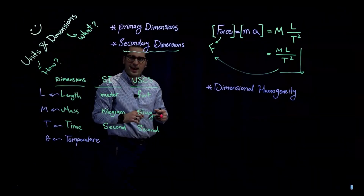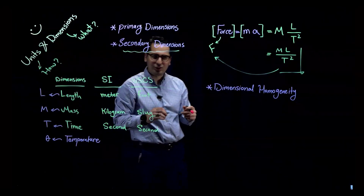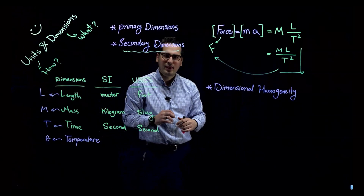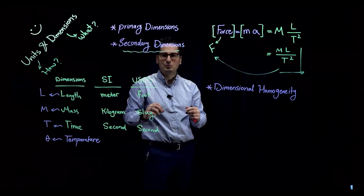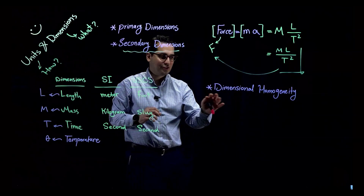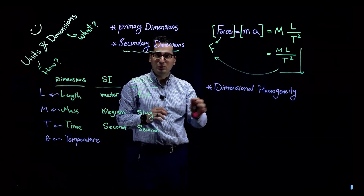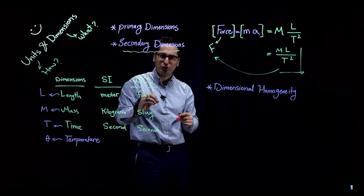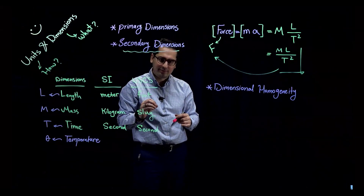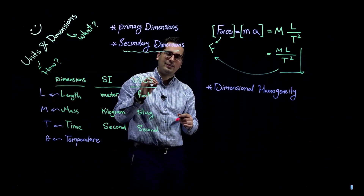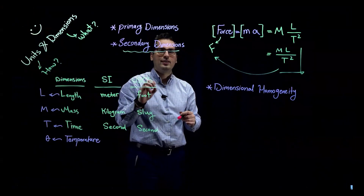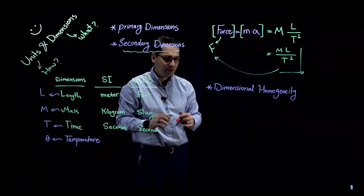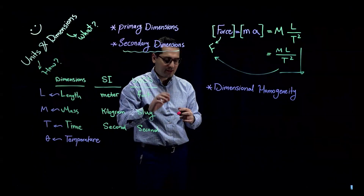The last concept I want to talk about is dimensional homogeneity. We call an equation dimensionally homogeneous when every single term in that equation has the same primary dimensions.